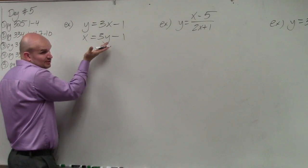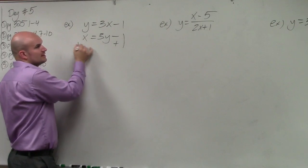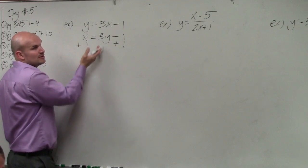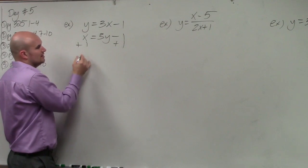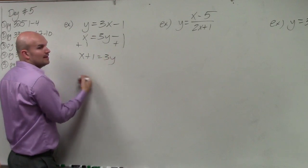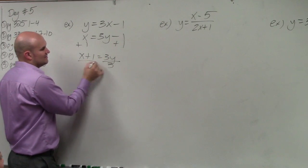So to do this, we're just going to use our inverse operations that you guys used in Algebra 1. So the first thing we always do is undo addition and subtraction, which would give us now x plus 1 equals 3y. Then we undo multiplication by division.